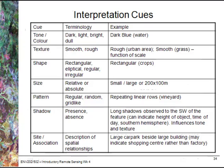We have a number of image interpretation cues that are fairly standard. On the left hand side we look at the individual cues, in the middle the terminology we can use, and on the right hand side an example. For the cue of tone or colour, we describe features as being dark or light or bright, and also by the colour associated with them — blue, green, red, etc.